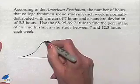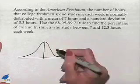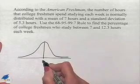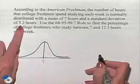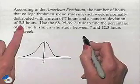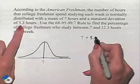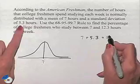We want to place right in the middle, dividing into two equal parts, our mean of 7. Now let's look at our standard deviation. If we take 7 and add 5.3 to that, we come up with 12.3.